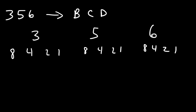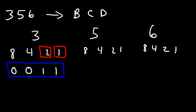Now 3 is the sum of 2 and 1. We didn't use the 8 and 4, so we're going to replace those with a 0. We did use the 2 and 1, so replace those with a 1. So the binary number 0011 corresponds to 3.